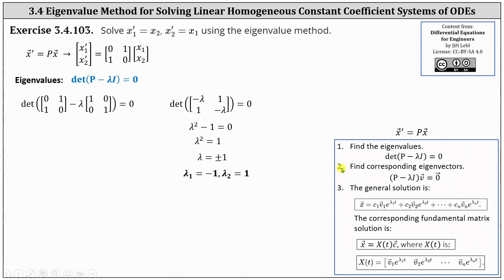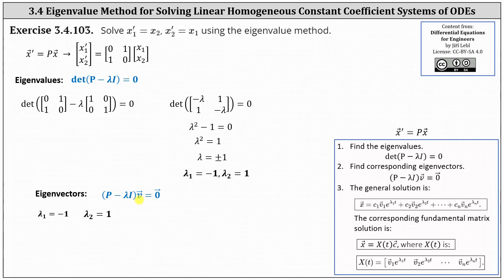Step two is to find corresponding eigenvectors for each eigenvalue. We do this by setting up the equation: the difference of P and lambda I times vector v equals a zero vector, and then solve for vector v, which gives us a corresponding eigenvector. We need to do this for lambda sub one and lambda sub two.